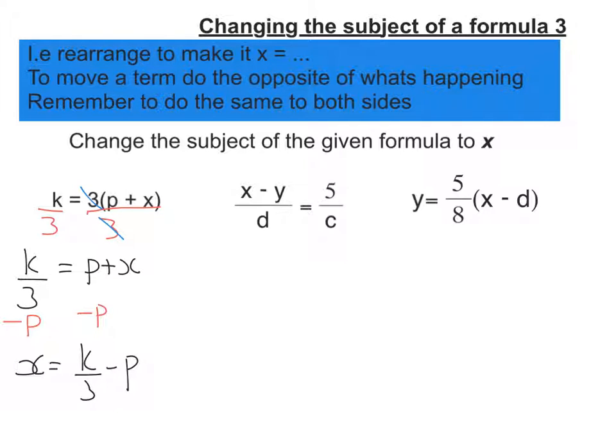Let's look at the second example. x minus y all over d equals 5 over c. So to get the x first, I need to get rid of this d. So it's dividing the bracket, the top line there. So let's multiply both sides by d. So on the left-hand side, the d's will just cancel, so I'm left with x minus y.